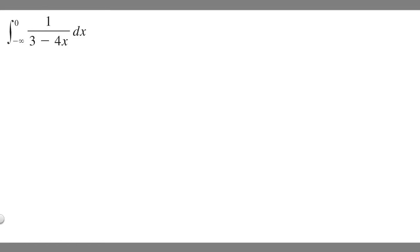In this problem, we're told to evaluate the improper integral from minus infinity to zero of one over three minus four x dx. In order to find an improper integral like this, what you're going to want to do is rewrite it as a limit.